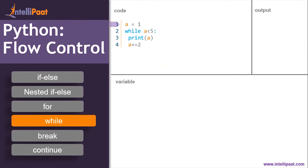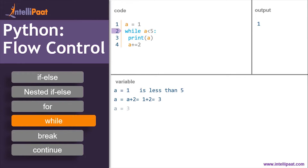Let's understand this with an example. We set a equal to one. While a is less than five — a equals one, less than five, condition is true — we print the value of a, getting output one. Then we increment a by two: one plus two equals three. Back to the loop — is three less than five? Condition is true. Print a, output is three.